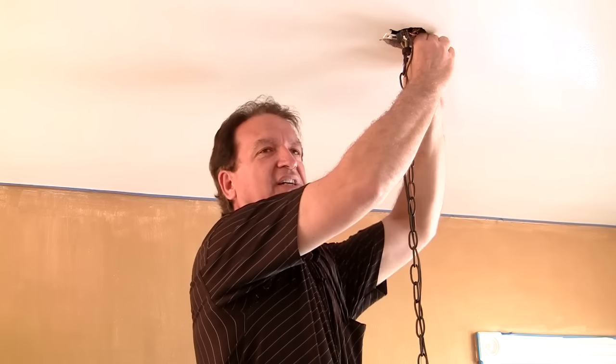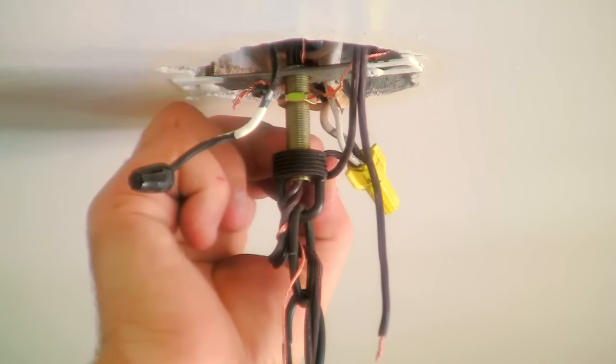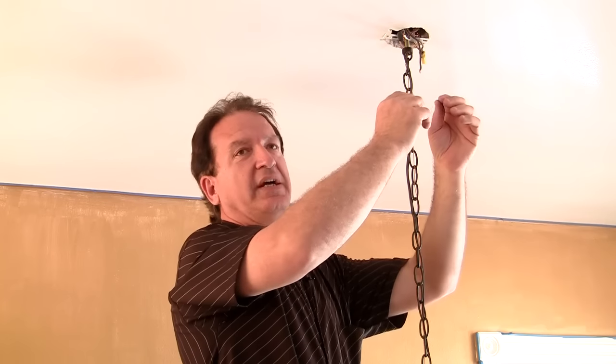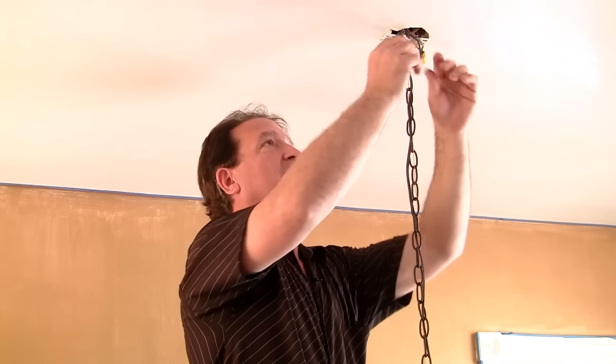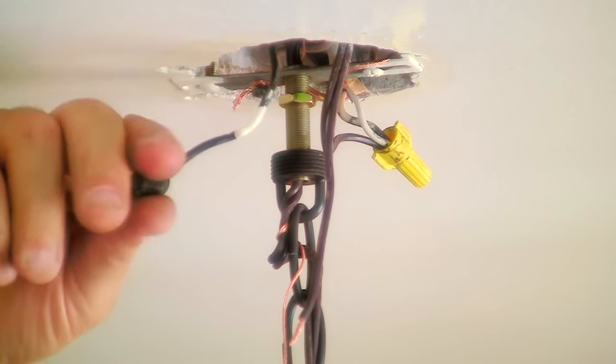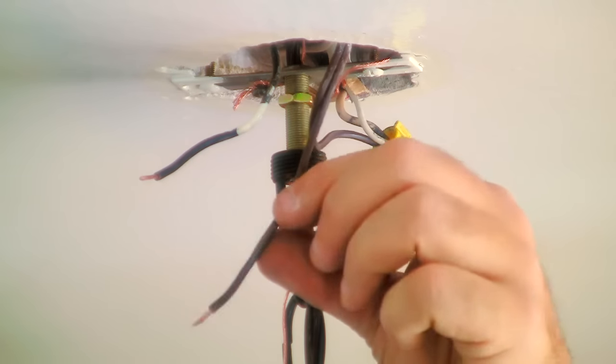When you're doing this, you want to make sure that you feel it get tight. Once it gets tight, make sure by pulling on the wire that nothing is loose, because you're going to shove these back in there when you're done and you don't want the wire to pop out on you. Because then the light won't work and could possibly short out and cause a fire. So just make sure that it is properly attached.